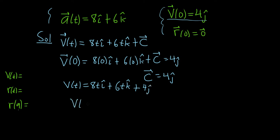I'm going to rewrite this in a nicer order. So it's really 8ti hat plus 4j hat plus 6t k hat, just to write it in the i, j, k form. That's the first answer.